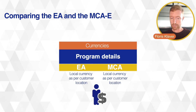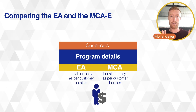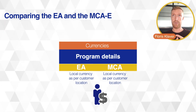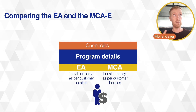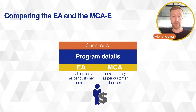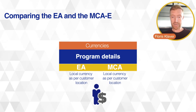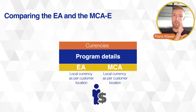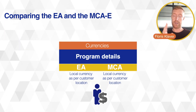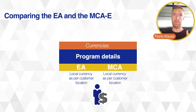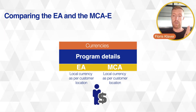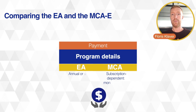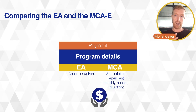For currencies, in the EA many countries had their own price list — Euro, Swiss Franc, Scandinavian currencies, US Dollar, and so on. In the MCAE this changes to a local currency per customer location, but US Dollar prices are used as the basis, with an exchange rate set looking back to the start of the month of your billing period.